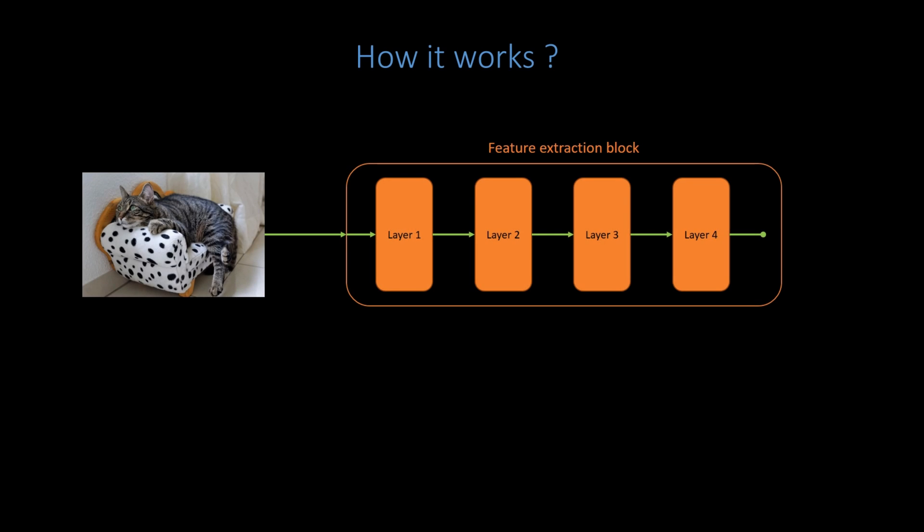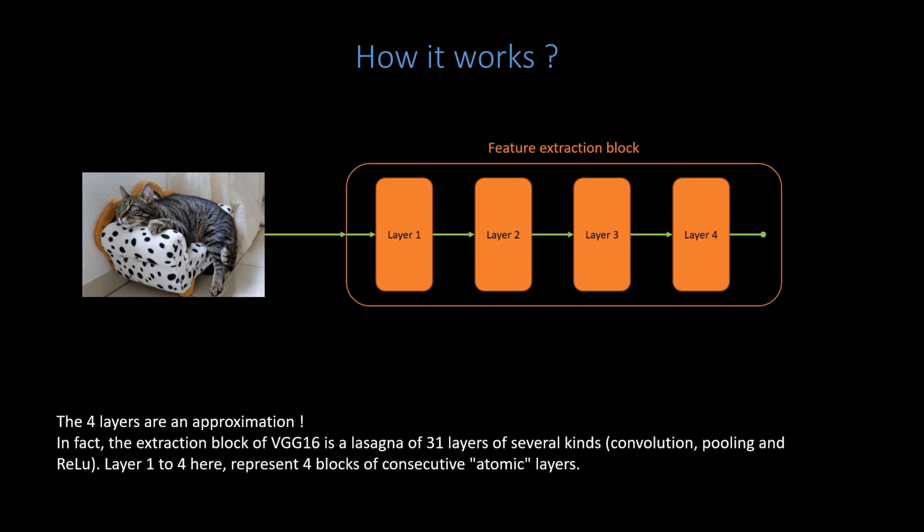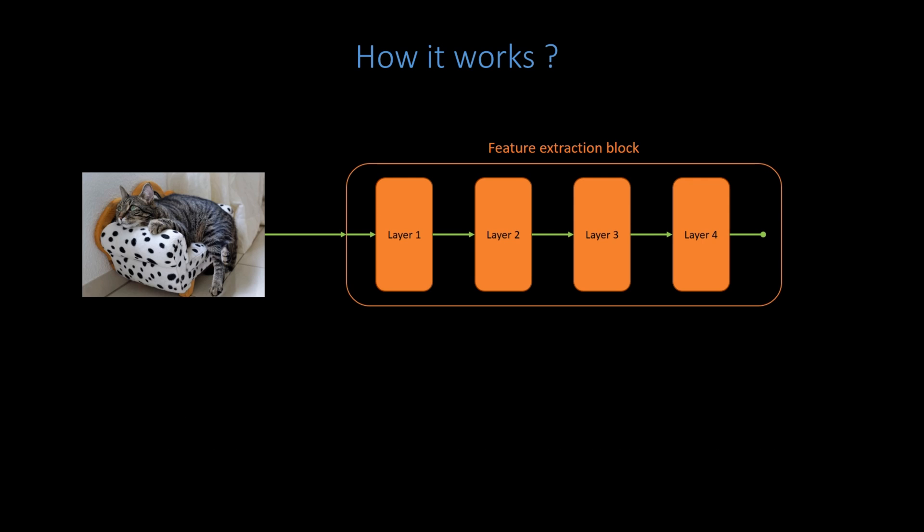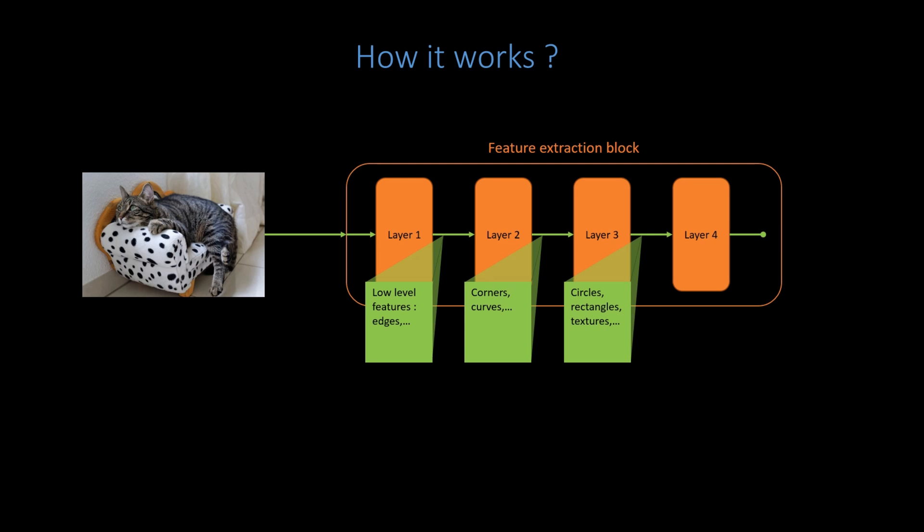Let's zoom further. Actually, the feature extraction block is a sequence of several layers, where the output of a layer is the input of the following one. Each layer itself can be seen as a feature extractor. The closer to the input image the layer is, the lower level the features detected are. For instance, the first layer on the left detects small edges in the image. The second layer combine them into corners or curves. Maybe the third layer combine the corners and curves in circles, rectangular forms or textures, and so on. Finally, we reach the last layer on the right, which can detect high-level features like ears or eyes.